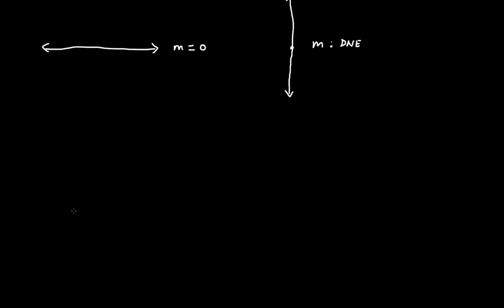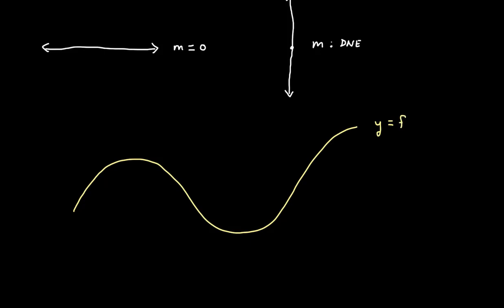Now we're going to move away from just a line. Let's suppose I have some curve function — let's call it y equals f of x. The idea is that it's not a line, so it doesn't have a constant slope, but it still has slope. It still has an instantaneous rate of change. At this point here there is an instantaneous slope — it's different from the slope here, or here, or here, and so on.